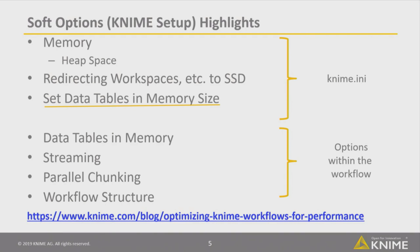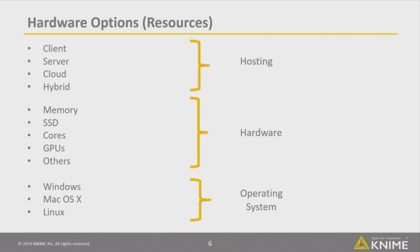Workflow structure is also important. If you follow the CRISP-DM cycle and first pre-process the data and filter it down before learning your actual model, you can also improve the speed of your workflow. We've added a blog post written by John Fuller — everything I just said is described in detail there. I'd recommend everybody bookmark it. It's very well written and is my cheat sheet for everything having to do with KNIME performance.